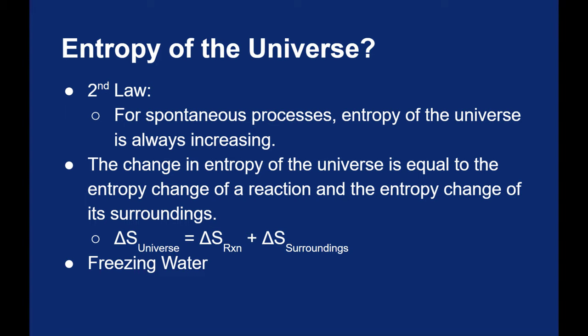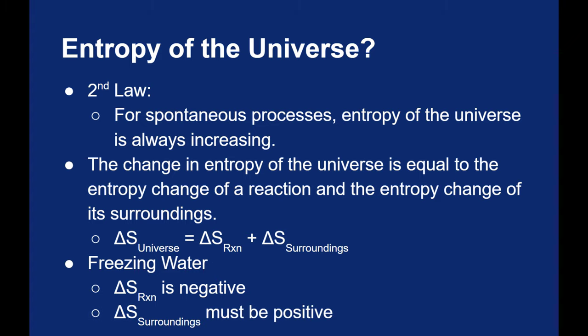Let's think about freezing water. What's the delta S of the universe for freezing water? When you freeze water, the reaction is actually becoming less entropic — it's becoming less random. But the freezing process is exothermic, and so by releasing heat into the surroundings, you're going to be moving air particles around more, and so the surroundings will actually become more random, more entropic. So the delta S for the reaction is negative because it's becoming less random, but the delta S for the surroundings is positive because the process is exothermic.